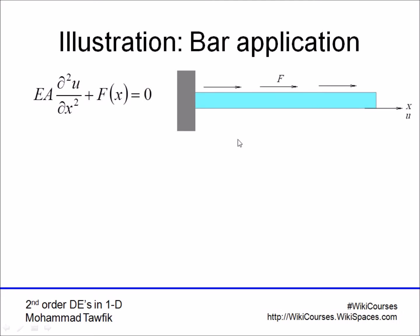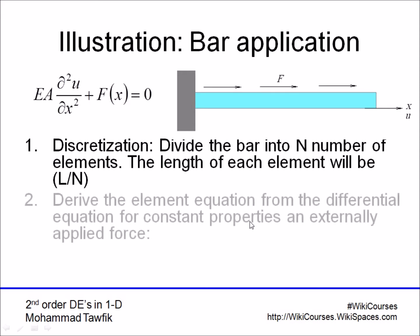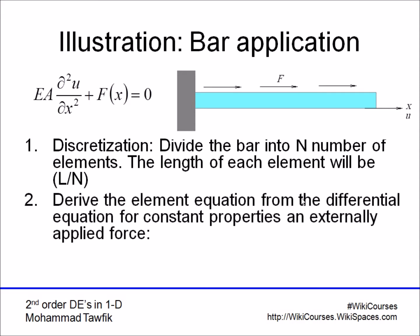Our boundary conditions are that it's fixed on this side and free on this side, so it can move freely from the right-hand side. Let's divide it into N number of elements; the length of each element will be the total length over N.